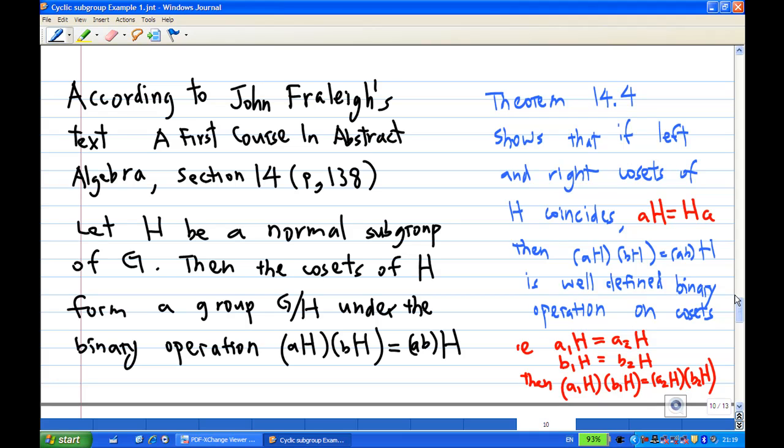Following theorem 14.4, it shows that if left and right cosets of H coincide, meaning aH equals Ha, then aH times bH equals abH is a well-defined binary operation on the cosets. Well-defined means if a1H equals a2H and b1H equals b2H, then the multiplication will still be equal.